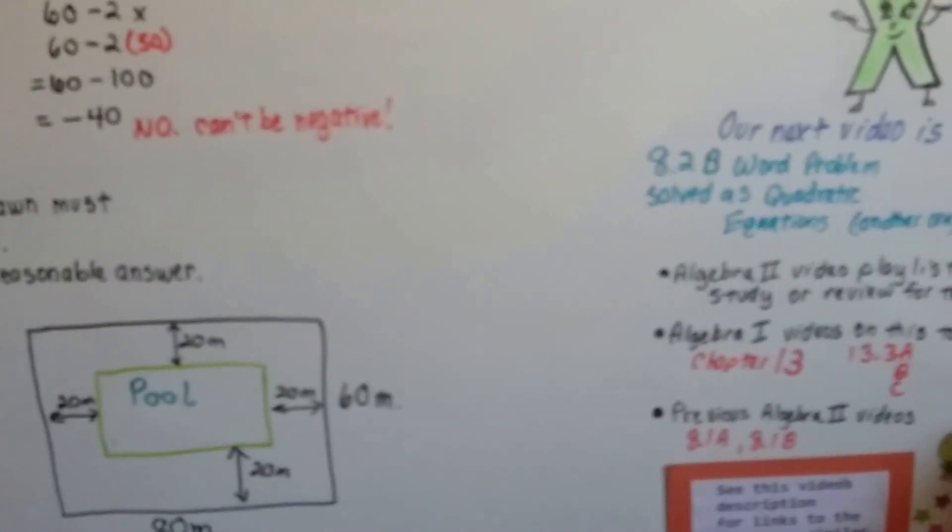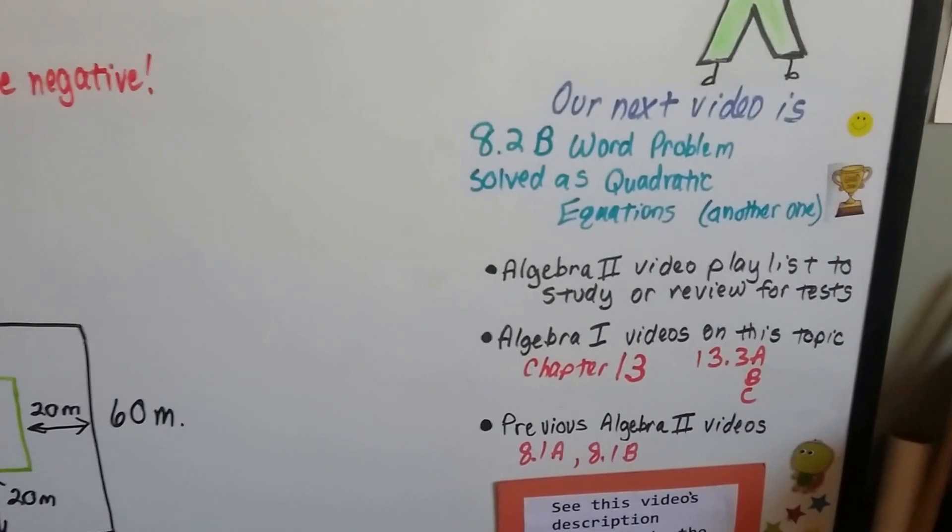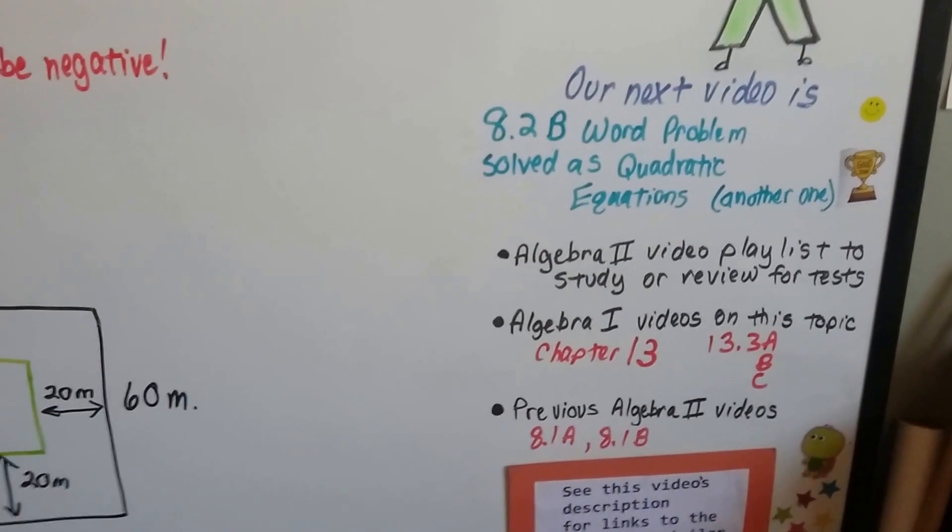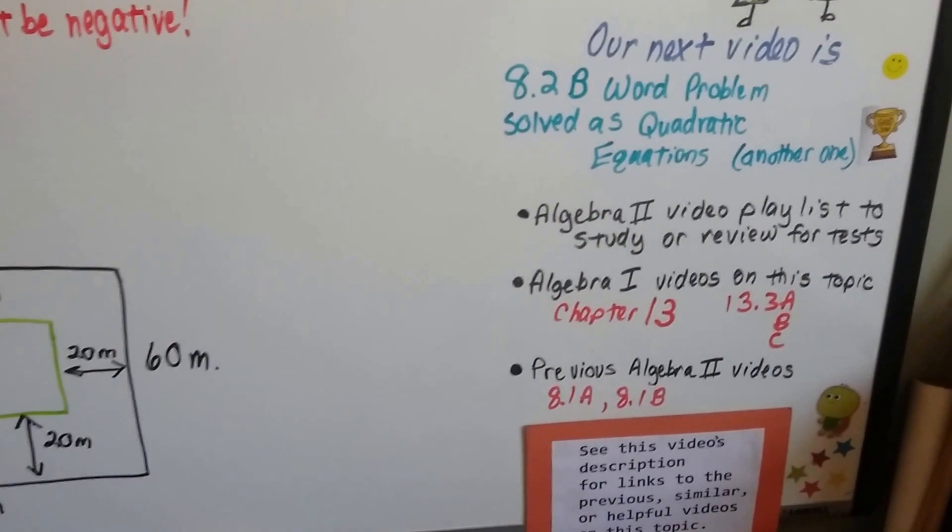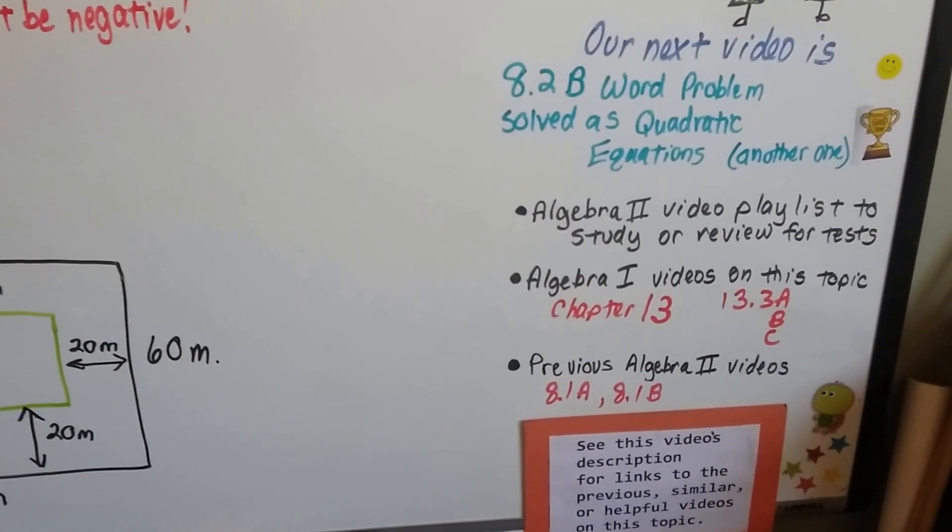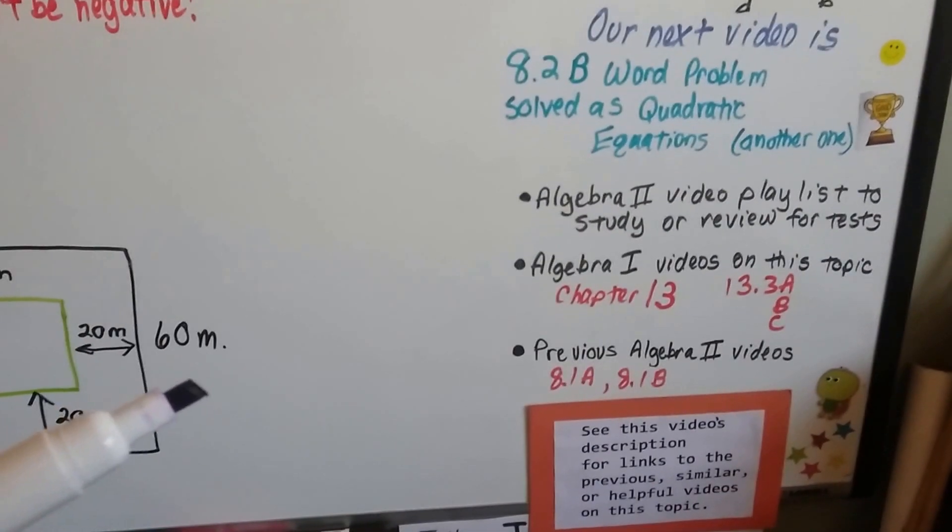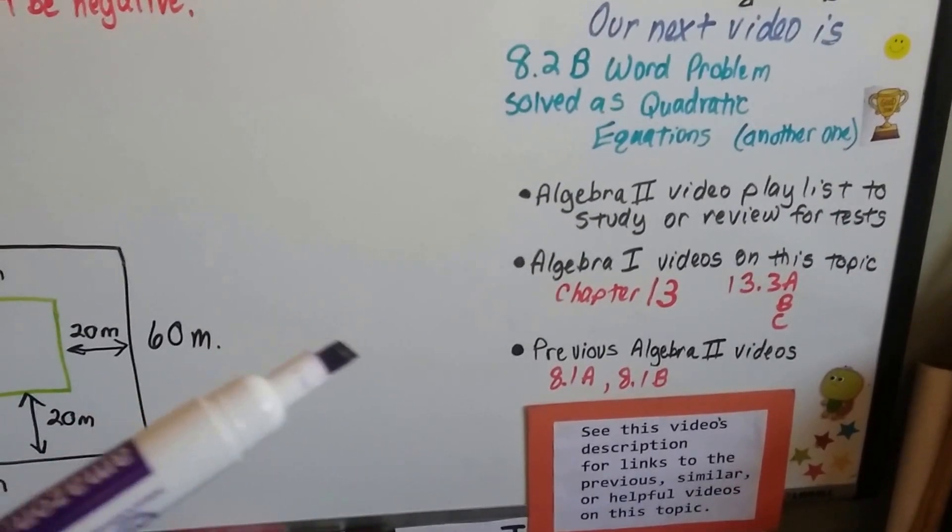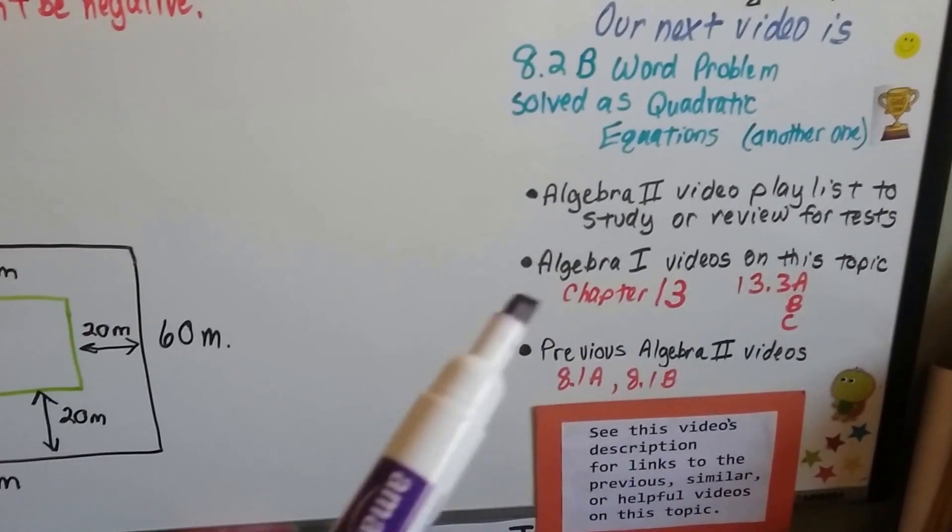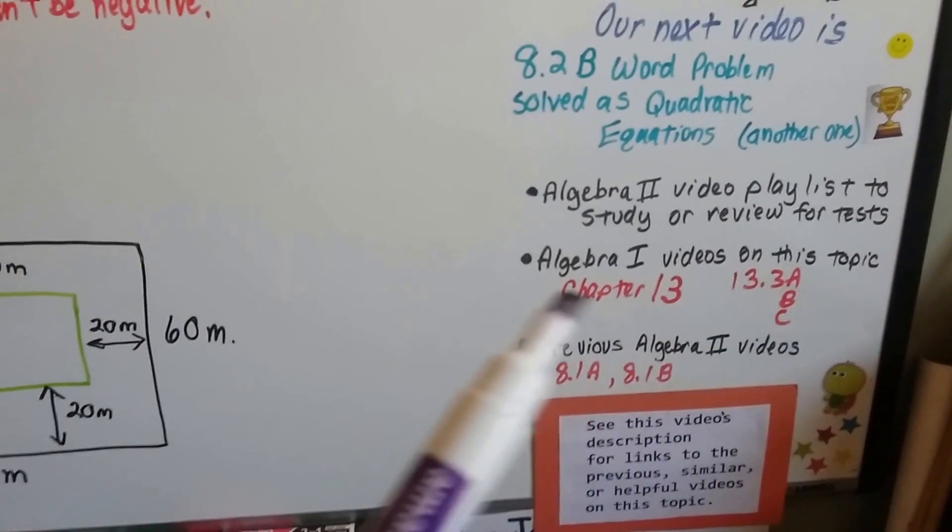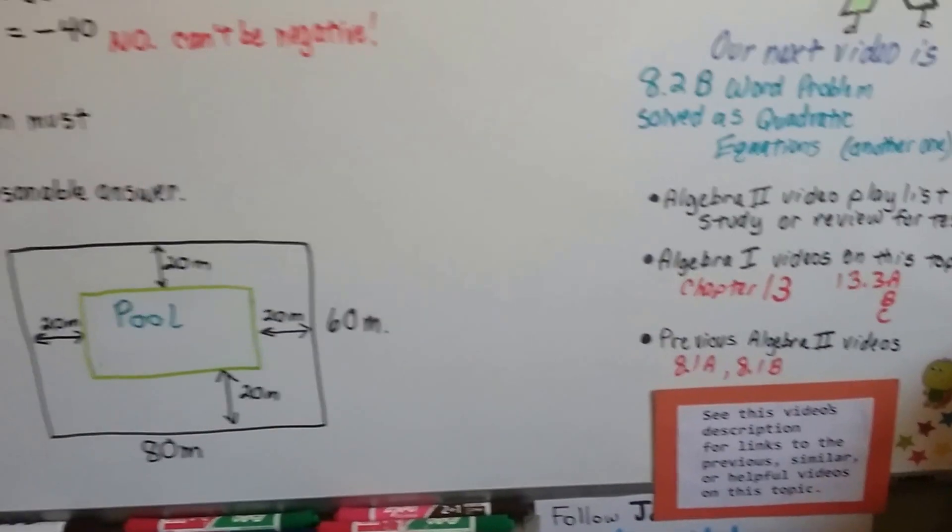Our next video, 8.2b, we're going to do this again. We're going to do a word problem and solve it with a quadratic equation. It's going to be a Pythagorean theorem one. I'm going to add this video to the Algebra 2 playlist, and the links from Algebra 1 from last year where we talked about quadratic equations and solving them, setting that first coefficient to a 1. These three links are going to be in there along with the two previous videos we just did for chapter 8.